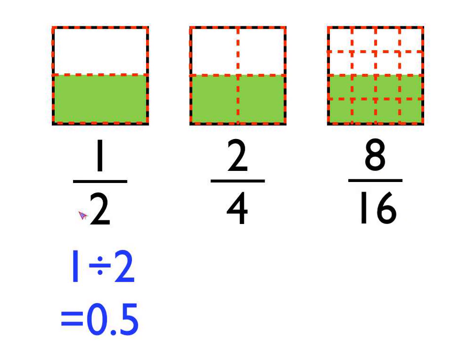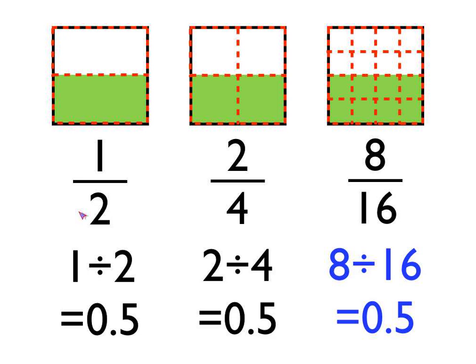Another way of thinking of fractions is as division sums — the top number divided by the bottom number, the numerator divided by the denominator. So one half is exactly the same thing as one divided by two, which, if you type it into a calculator or use short division, you'll see is 0.5. But if we look at two-quarters, two divided by four also gives us 0.5. So you'll see that one-half, two-quarters and eight-sixteenths all give us the same answer: 0.5.